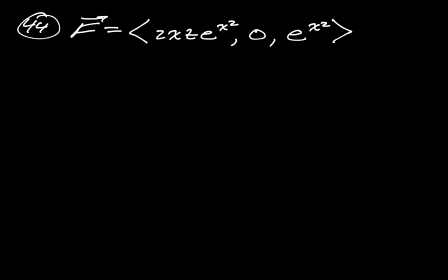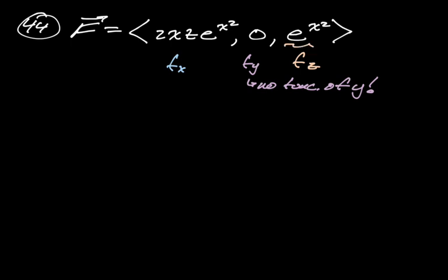The next field is (2xze^x², 0, e^x²), with components partial x, partial y, and partial z. Partial y is 0, which means there is no function of only y involved — because if there were, partial y would have had extra terms. Since it's just zero, there's no y-dependent part. Because integrating partial z (e^x²) with respect to z looks easier here, I'll do that: it gives ze^x².